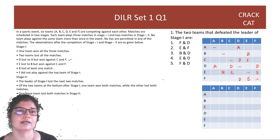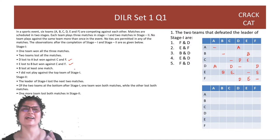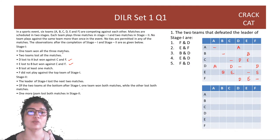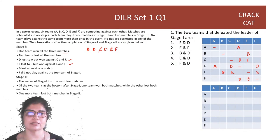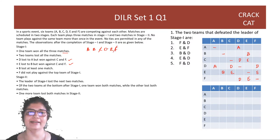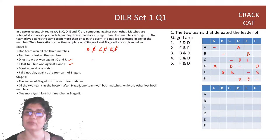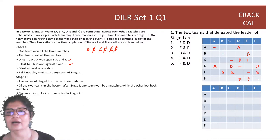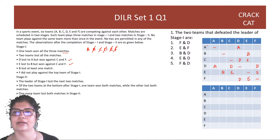B lost at least one match, and F did not play against the top team. Who won all three matches in stage 1? C and F have lost, D has lost to A, B lost at least one, and E lost to B. So it has to be A — A has won all matches in stage 1.